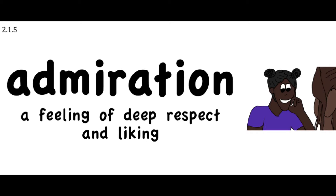Before we read our story, let's go over some of our vocabulary words. Our first one is admiration. If you have admiration for someone or something, that means that you have a feeling of deep respect and liking, or wonder for that person or thing. The American people have a great deal of admiration for the first astronauts who walked on the moon.